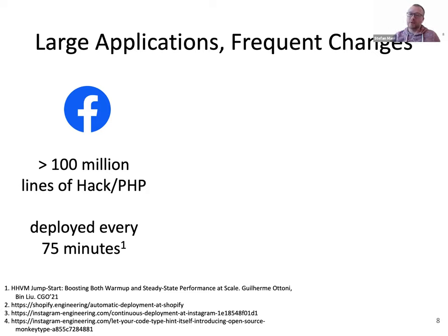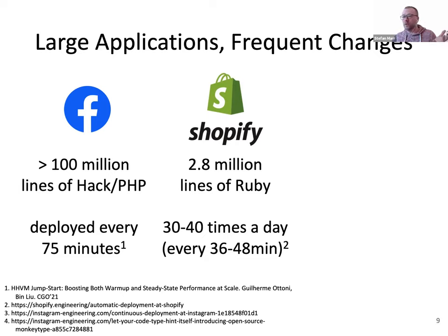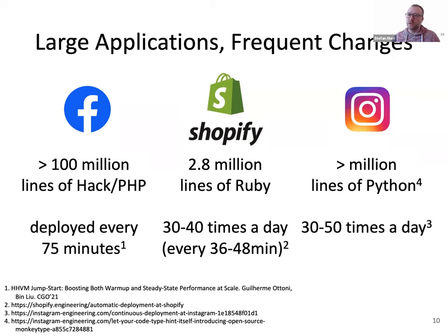They actually deploy every 75 minutes. So from a 75-minute chunk, about 25 minutes every time you're not serving your application at 100% efficiency. Facebook has 100 million lines of Hack PHP — that's a huge problem. Not everybody has that many lines of code, but for instance Shopify — you heard Maxim talking about building a JIT for them — they have about 3 million lines of code and deploy perhaps even more rapidly, 30 to 40 times a day. Instagram has a million lines of Python and also deploys 30 to 50 times a day. So there's huge churn in these systems.